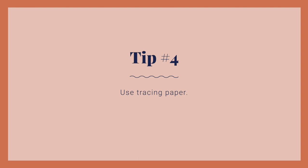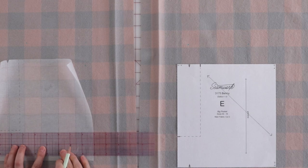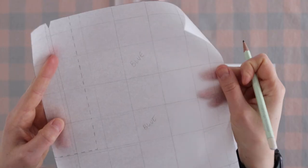Tip number four, use tracing paper. To really help visualize how the plaids or stripes are going to look on your pieces before cutting them out, use tracing paper.